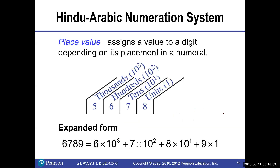For example, with 5,670: 5 is in the 1,000s place, 6 is in the 100s place, 7 is in the 10s place, and 0 is in the units place. And that can be expanded accordingly.